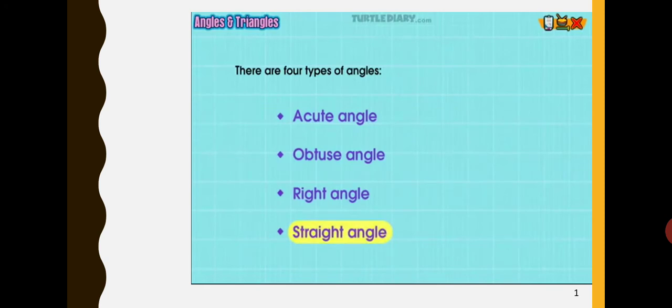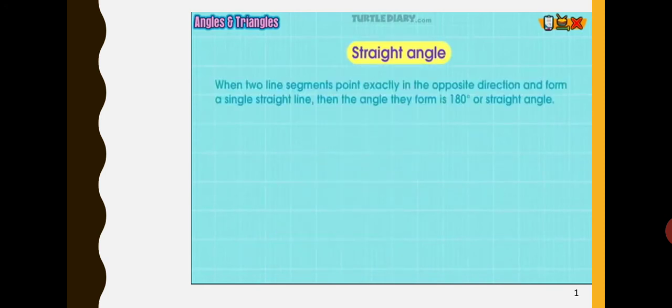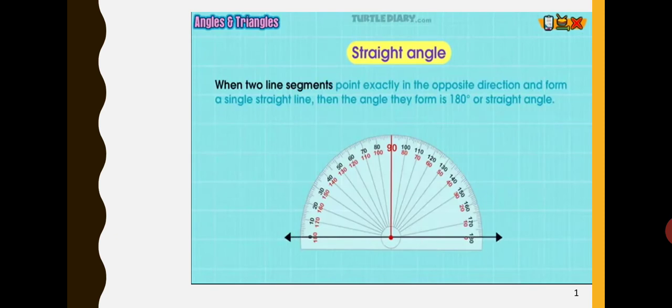Straight angle. When two line segments point exactly in the opposite direction and form a single straight line, then the angle they form is 180 degrees or straight angle.